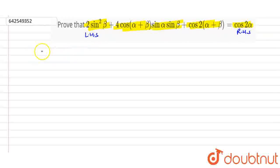Write the LHS part: 2sin²β + 4cos(α+β)sinαsinβ + cos2(α+β). Now to simplify it,